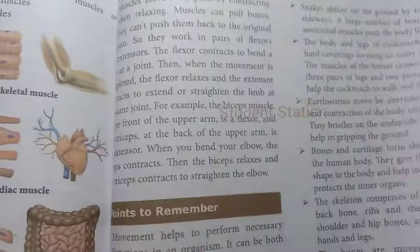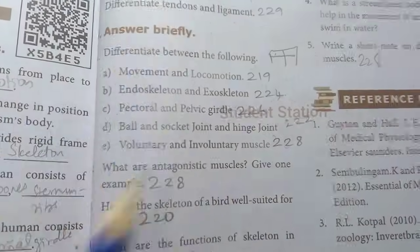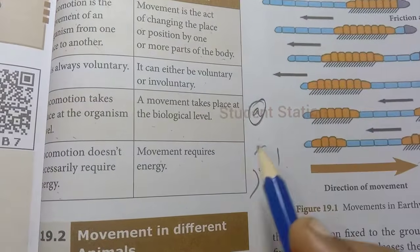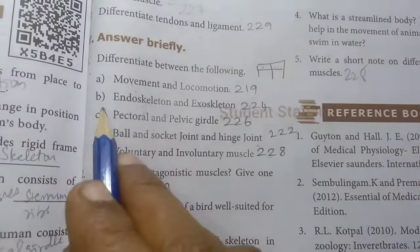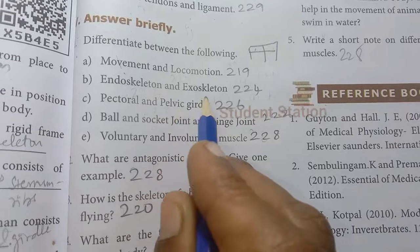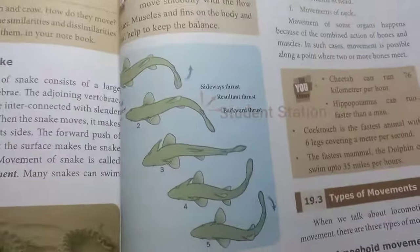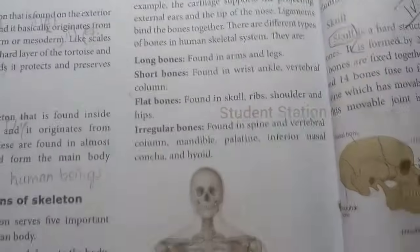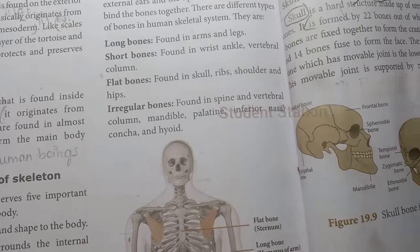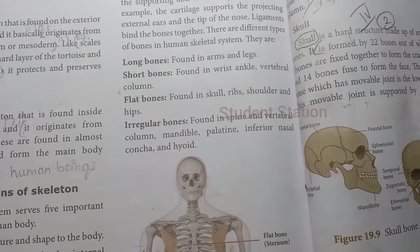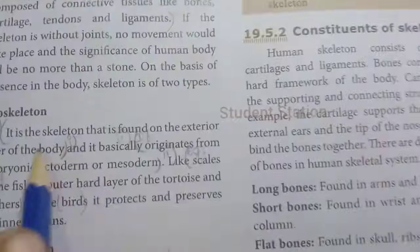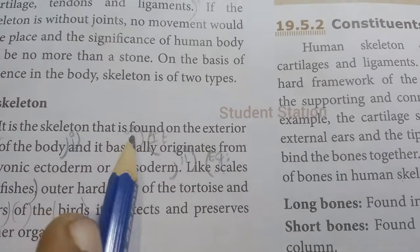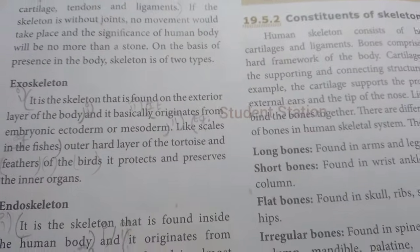That is Roman number 5, first one answer. Then Roman number 5, first one B: Endoskeleton and Exoskeleton, page 224. Exoskeleton is the skeleton that is found on the exterior layer of the body.